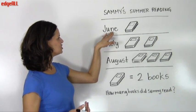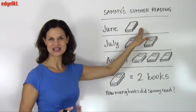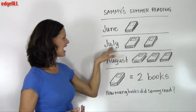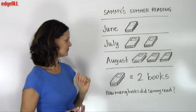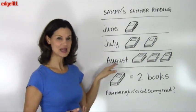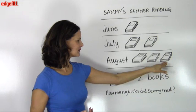Let's look at each month. We can see that in June, we have one book symbol, in July, two book symbols, and in August, three book symbols.